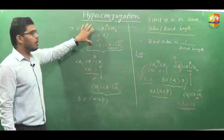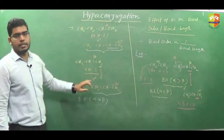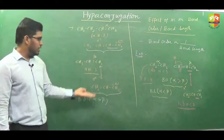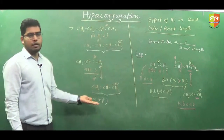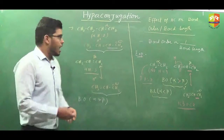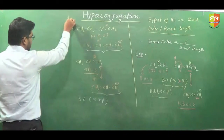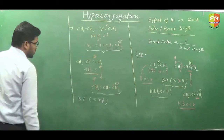Since more number of hyperconjugating structures exist in which carbon-carbon single bond is present, comparing the bond order of alpha and beta: bond order of alpha is more than the bond order of beta. Because in beta we have more number of hyperconjugative structures where carbon-carbon single bond is present. Here the number of such structures is lesser in comparison. That is why the bond order of this is more than this, and bond length will be the reverse order.